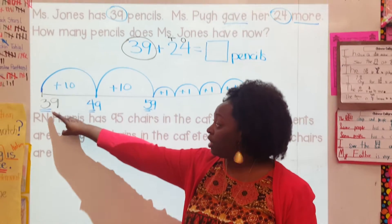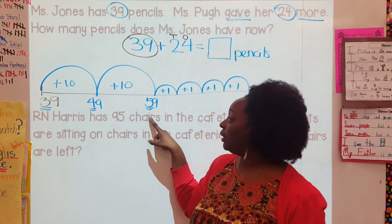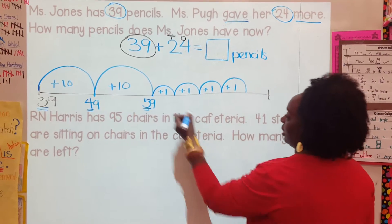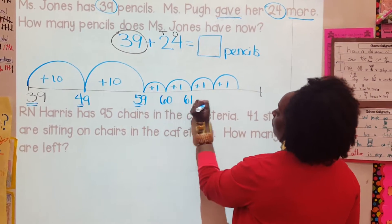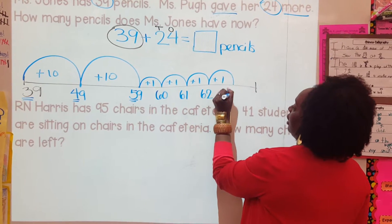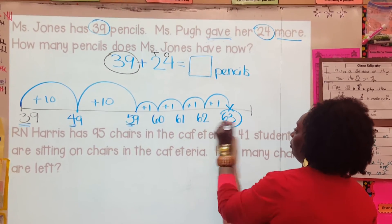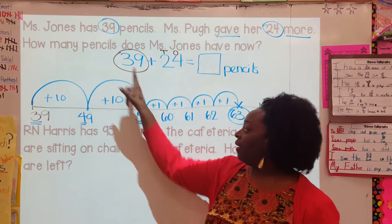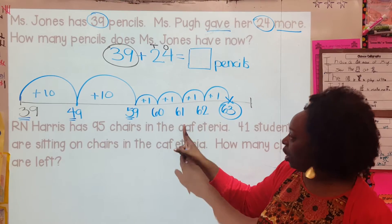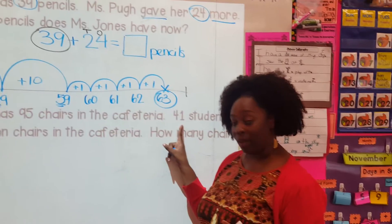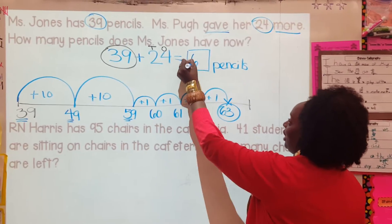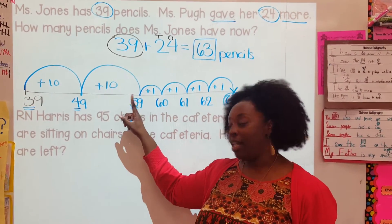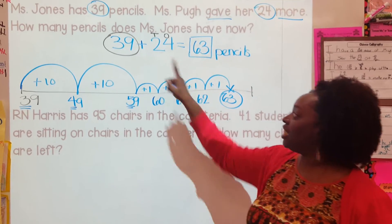Now let's start at 59 and count on from our ones: 59, 60, 61, 62, 63. So I'm going to put plus 10 for the tens jumps and plus ones for the ones jumps. 39 plus 24: 39, 49, 59, 60, 61, 62, 63. How many pencils do I have now? I have 63 pencils. That's an example of using your big 10 jumps and small ones jumps to solve an addition story problem.